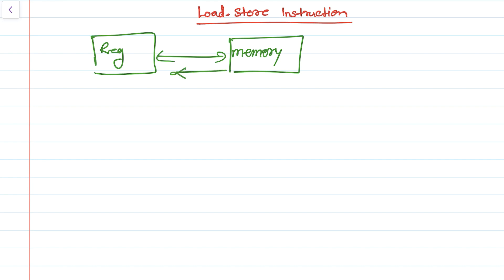The load type of instructions loads the data from memory into the registers, and the store type of instructions stores the data from registers into memory. It has multiple versions such as a single register transfer and a multiple register transfer, which is very useful while accessing a large number of memory addresses. First we are going to discuss single register transfer.